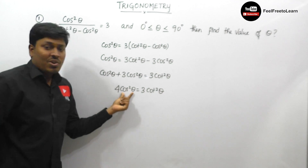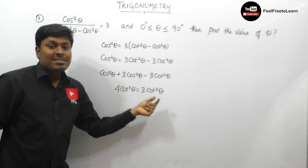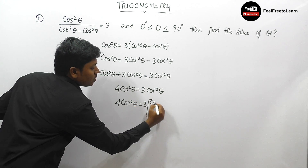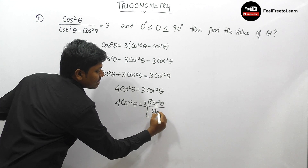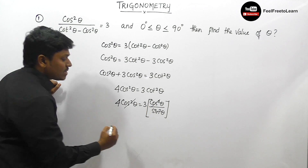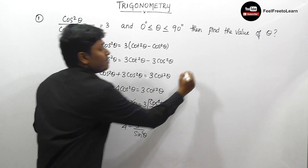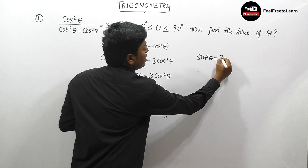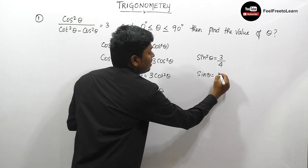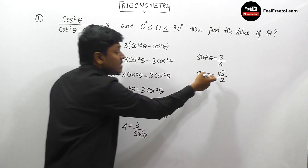We have 4·cos²θ equals 3·cot²θ. Let me write cot²θ as cos²θ divided by sin²θ. So this becomes 4·cos²θ equals 3 times (cos²θ / sin²θ). We can cancel cos²θ on both sides, leaving 4 equals 3 divided by sin²θ. Therefore sin²θ equals 3/4, and taking the square root, sin θ equals √3/2.